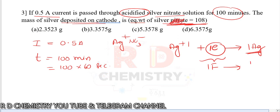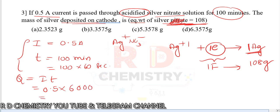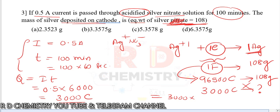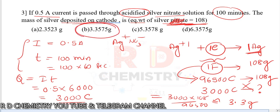Equivalent mass of silver is 108 grams. Quantity of charge Q equals I times t equals 0.5 into 6000 equals 3000 coulombs. Since 96500 coulombs deposits 108 grams, 3000 coulombs deposits 3000 times 108 divided by 96500, which is approximately 3.3 grams. The answer is option B.